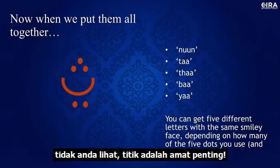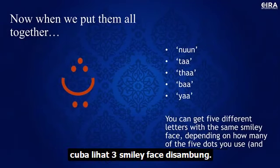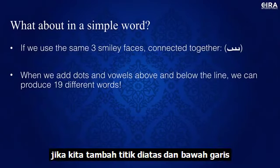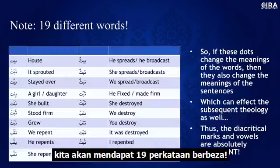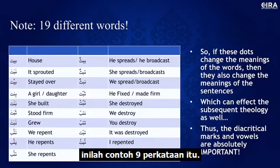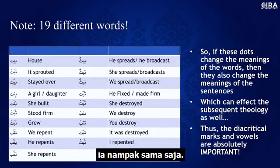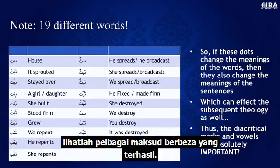Now let's look at three smiley faces connected together. When we add dots and vowels above and below the line, we get 19 different words from the same skeletal structure. There's an example of 19 right there. If you remove the dottings, they all look the same — but once you start adding them, look at the completely different meanings that emerge.